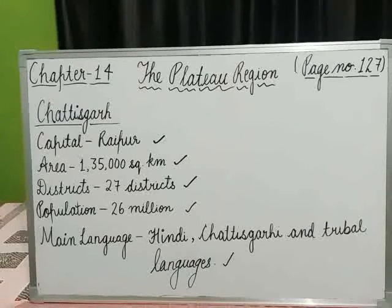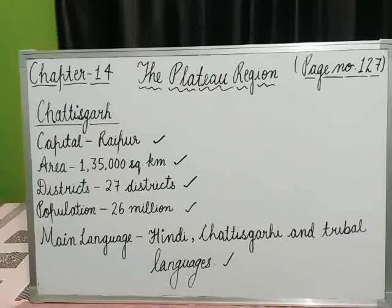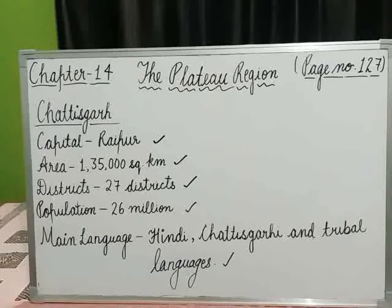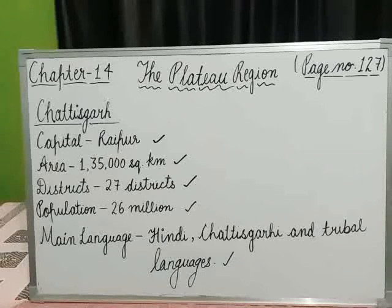Bhilai steel plant, mining of coal, iron, and manganese, metal crafts, jewellery, painting, wood carvings, bamboo work, furniture, and terracotta all provide jobs to the people. Wood carvings involve making different types of designs on wood. These works provide livelihood to the people of the state.